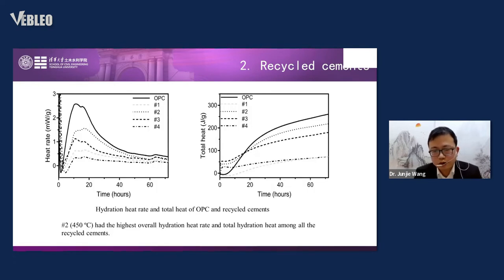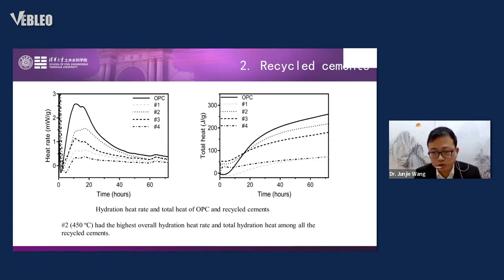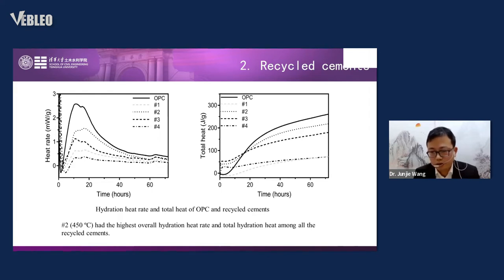Here is the hydration heat rate and total heat of OPC and recycled cement. Number two at 450°C had the highest hydration heat and total hydration heat among all recycled cements, but still cannot match OPC. However, if it has similar physical performance like compressive strength or durability as OPC but much lower hydration heat, that's actually an advantage, because high early hydration heat can cause early cracks in concrete.